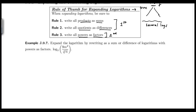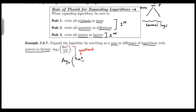Looking at the first example: expand the logarithm by rewriting as a sum or difference of logs with powers as factors. We have log base three of 9m to the fourth over cube root of n. There's a lot going on. First, notice you have a quotient, so right away you'll use the quotient rule. There's also a product and an exponent on m, so we'll be using all three rules. We'll do the most obvious first — the quotient rule.